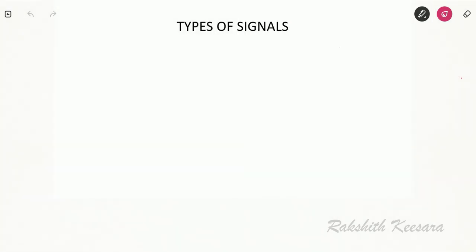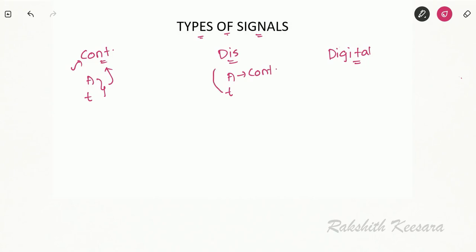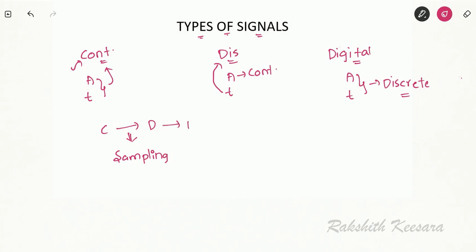Let us understand the basic types of signals. A signal is said to be continuous if both amplitude and time are continuous. A signal is said to be discrete if amplitude is continuous but time is discrete in nature. A signal is said to be digital if both amplitude and time are discrete. The process of conversion from continuous to discrete is called sampling, and from discrete to digital is called quantization.